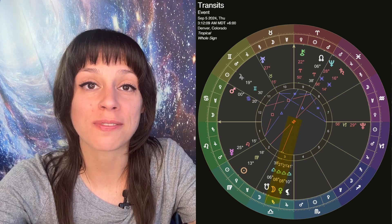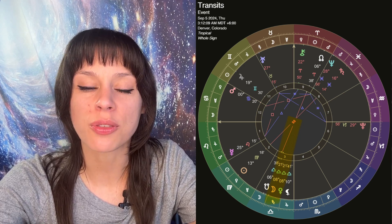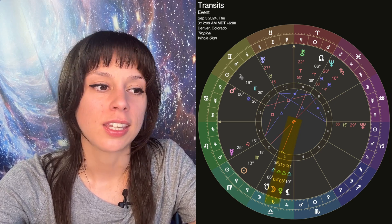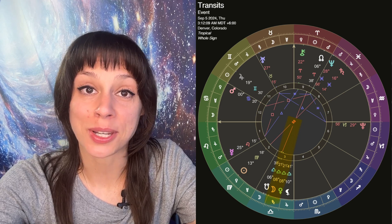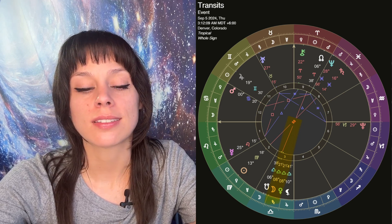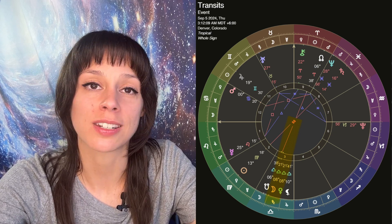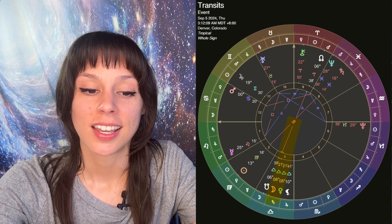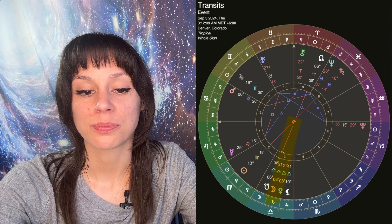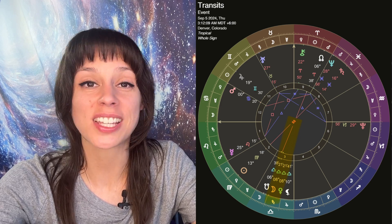Usually, a Libra moon conjunct Venus is lovely. But with the south node there, we're dealing with things disappearing. So just be aware, especially if it's financial. Try not to spend crazy amounts of money. Try not to lose anything.